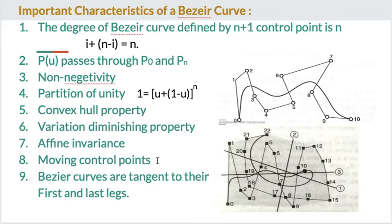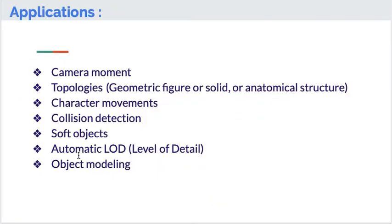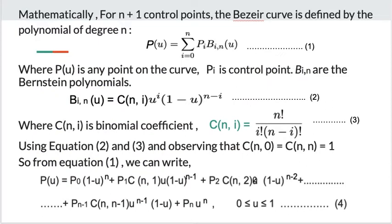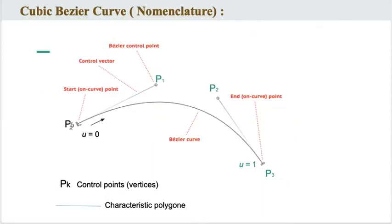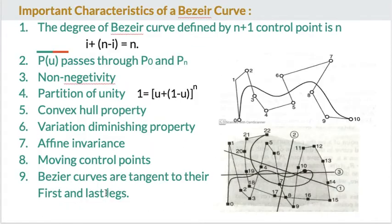Eighth is moving a control point: changing the position of the control point will change the shape of the defined Bezier curve. Ninth, Bezier curves are tangent to their first and last legs, which we have already seen.